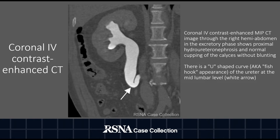Coronal IV contrast-enhanced MIP CT image through the right upper abdomen in the excretory phase shows proximal hydroureteronephrosis and normal cupping of the calyces without blunting. There is a U-shaped curve, also known as the fishhook appearance, of the right ureter at the mid-lumbar level, as indicated by the white arrow.